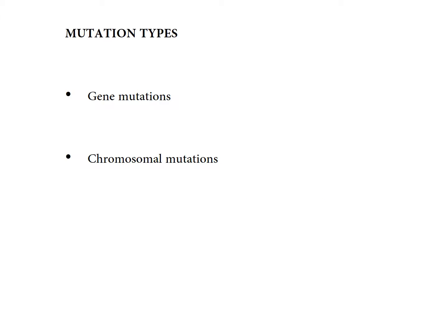Mutations can be of two types: mutations at the gene level, and mutations at the chromosomal level. At the chromosomal level you can have breaks in chromosomes, while at the gene level you can have point mutations in genes.